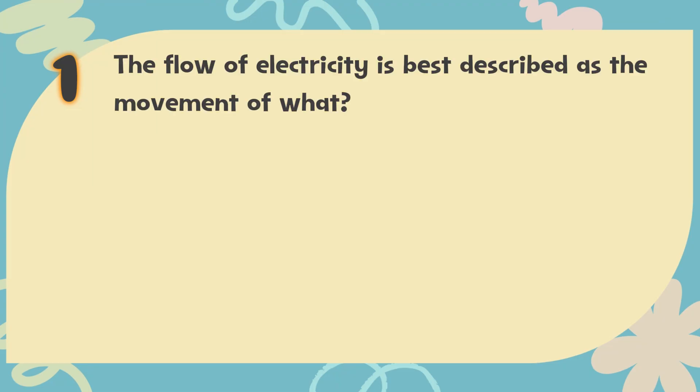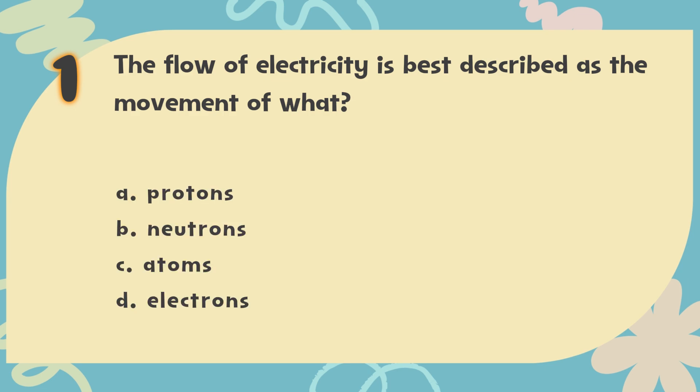Number 1. The flow of electricity is best described as the movement of what? The choices are: A. Protons, B. Neutrons, C. Atoms, D. Electrons.